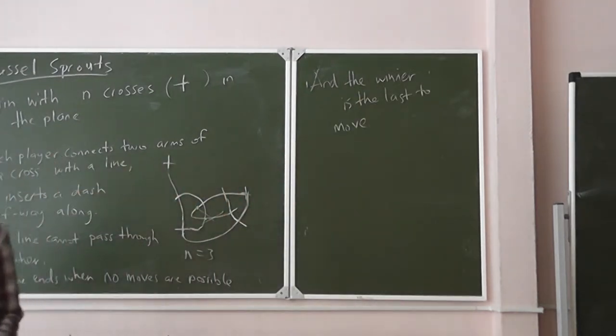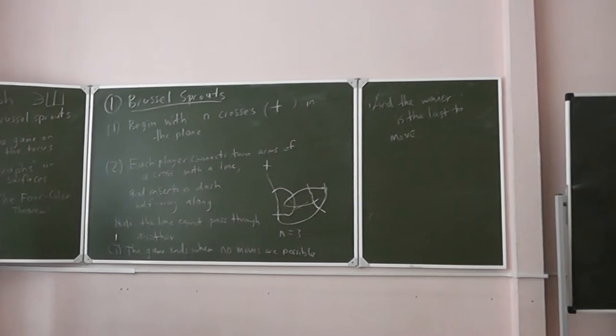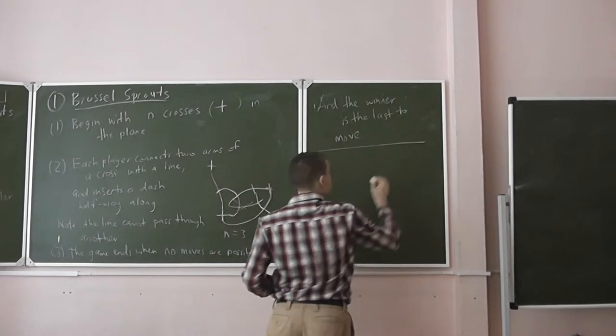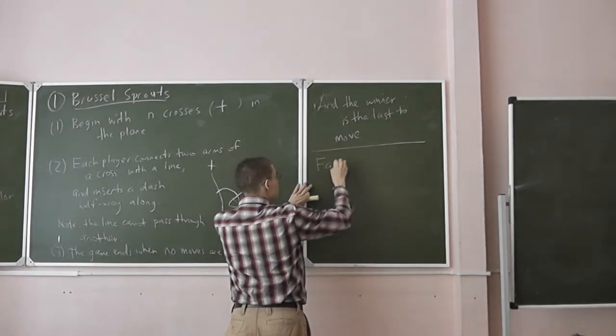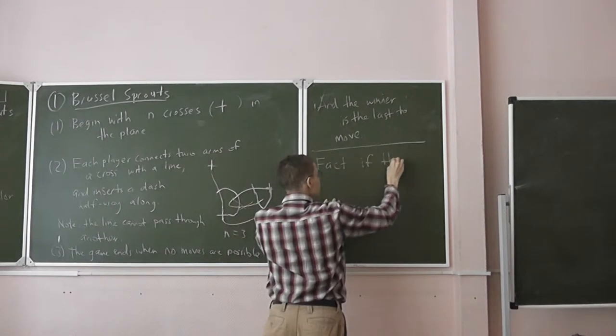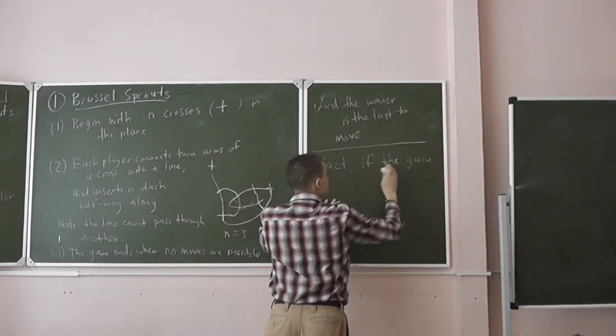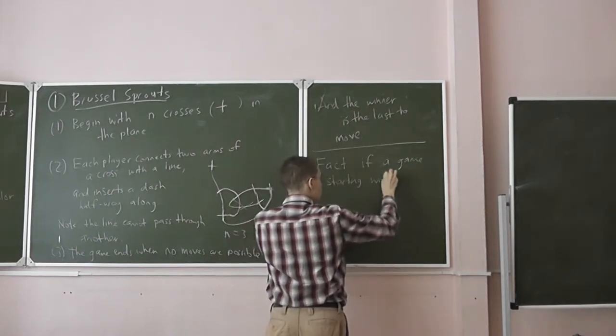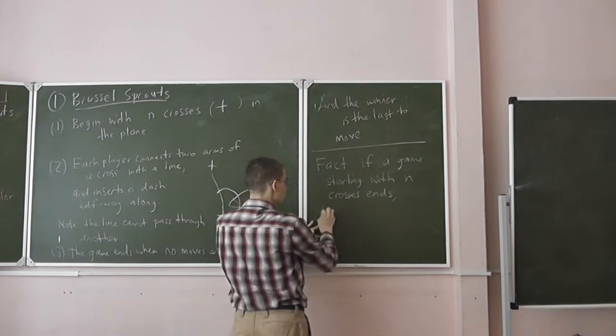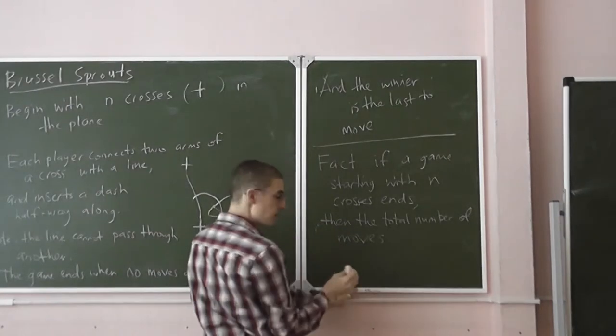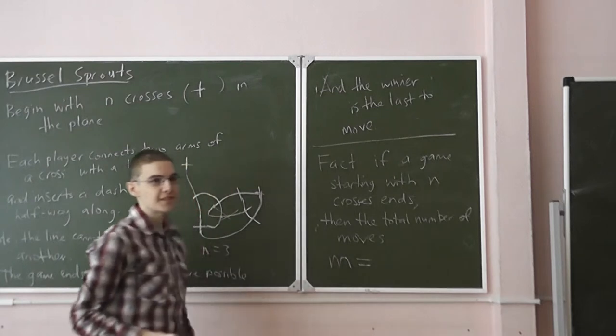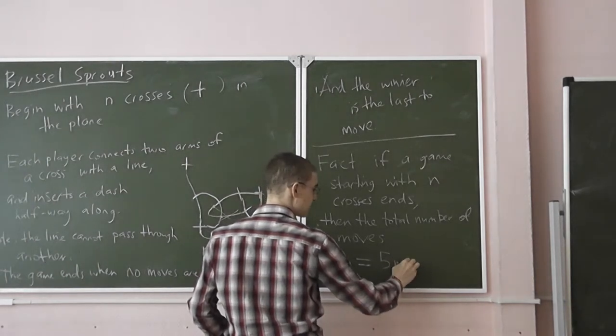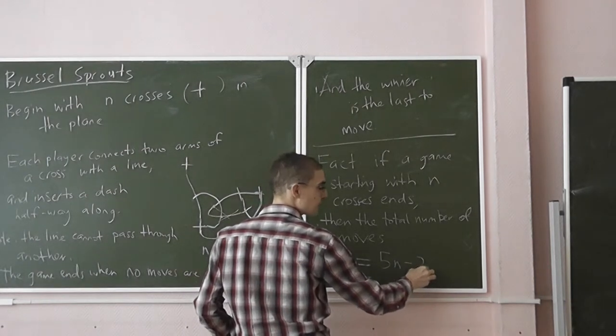And it'd be good motivation for what we'll need. So Nicolai, earlier, you gave a formula. So the fact was, if the game ends, if a game starting with n crosses ends, then the number of moves it's called M. What was the formula, Nicolai? Five n minus two. Five n minus two. So would you like to recall the proof for us?